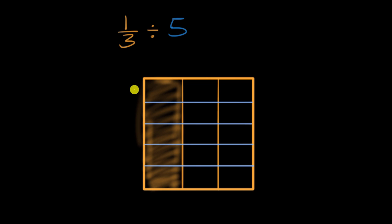So notice I now split this whole into one, two, three, four, five rows of equal height. Now, if I go to my original third and I divide it by five, I would be left with this right over here. But what fraction is this of the whole?